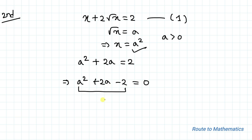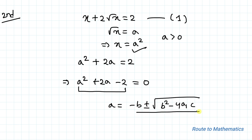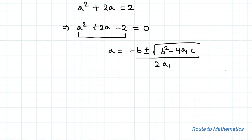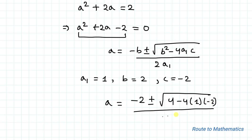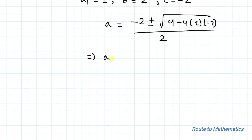This is a quadratic equation. To find the value of a, we apply the quadratic formula: a equals minus b plus or minus root of (b squared minus 4ac), all divided by 2a. Here a₁ equals 1, b equals 2, and c equals minus 2. Substituting these values: a equals minus 2 plus or minus root of (4 minus 4 times 1 times minus 2), divided by 2, which gives minus 2 plus or minus root of (4 plus 8) divided by 2.